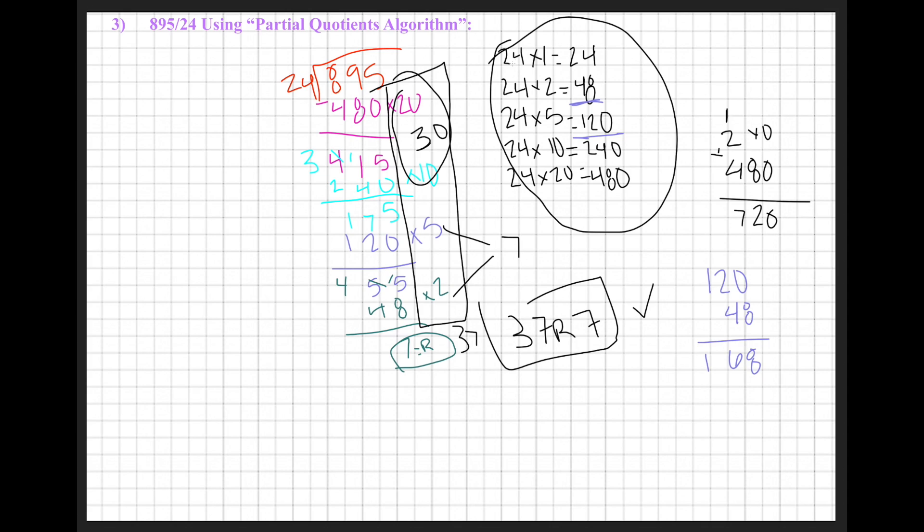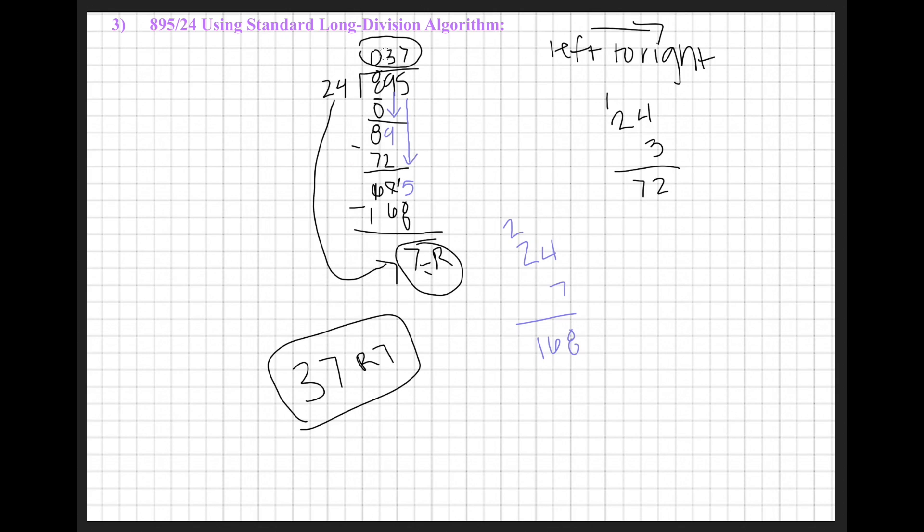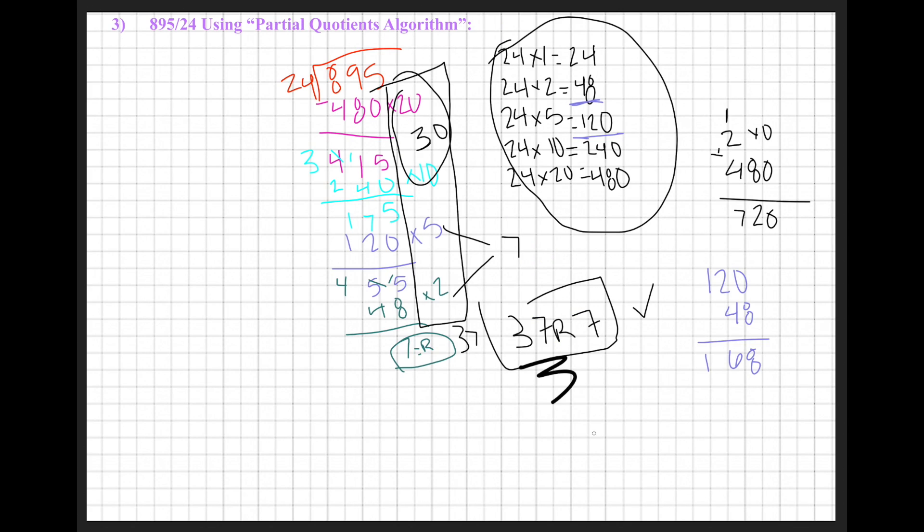Partial quotients just tends to break it down further, and it's helpful because it allows you to use multiplication facts that you already know. Remember, these were our multiplication facts that I already knew, whereas this one might be a little trickier because there might be some outside math that needs to be going on. If we're not familiar with these multiples, like 24 times 3 I wasn't familiar with, 24 times 7 I wasn't familiar with, but in the end it does give us the same answer of 37 remainder 7.